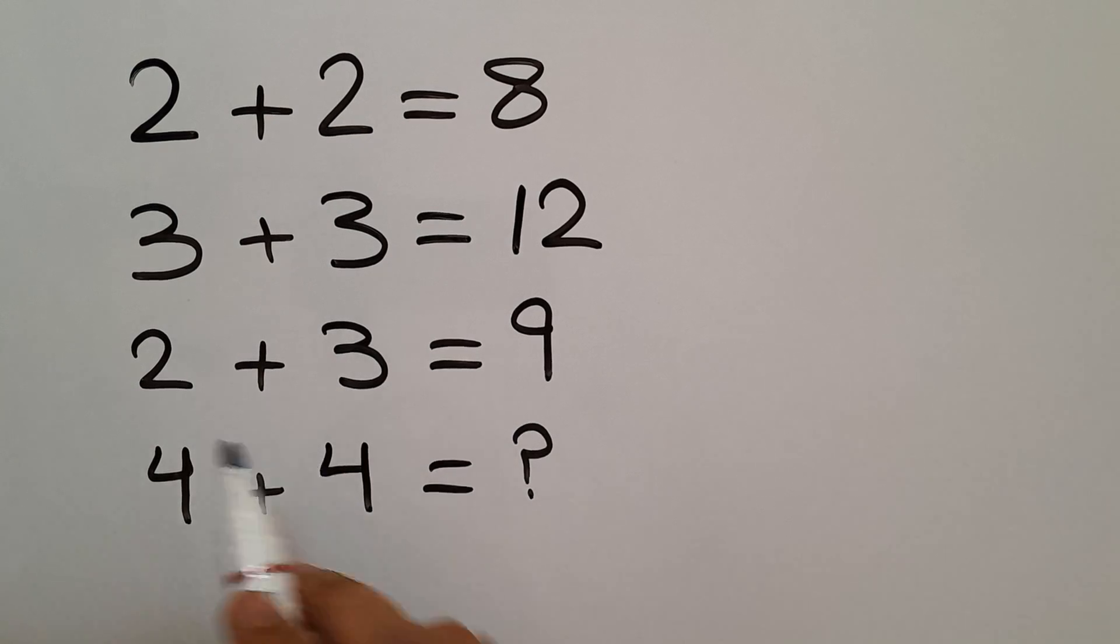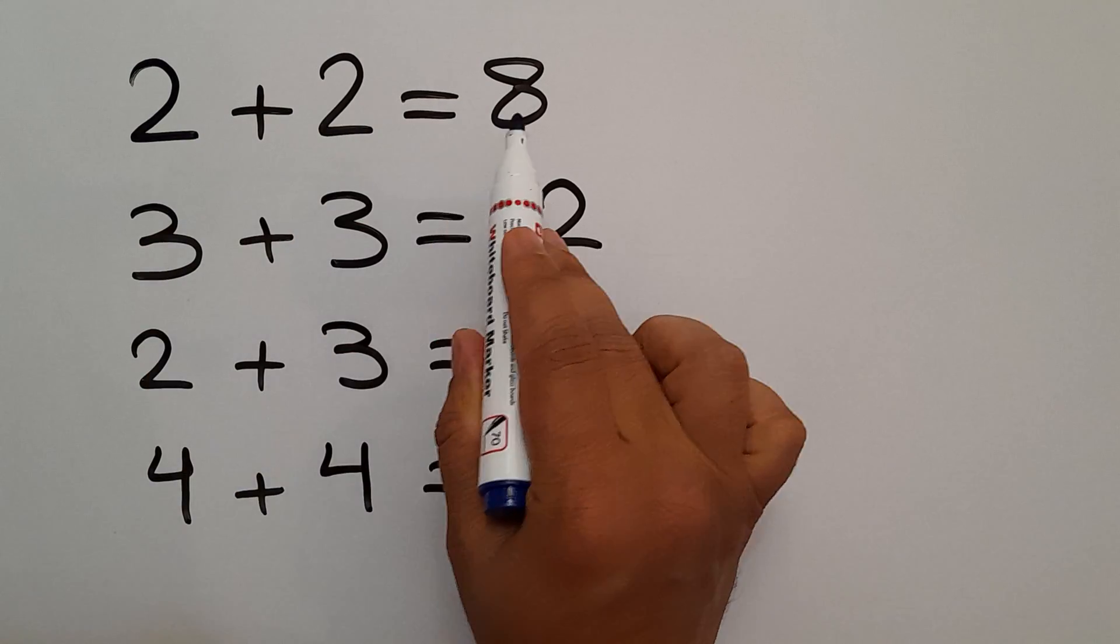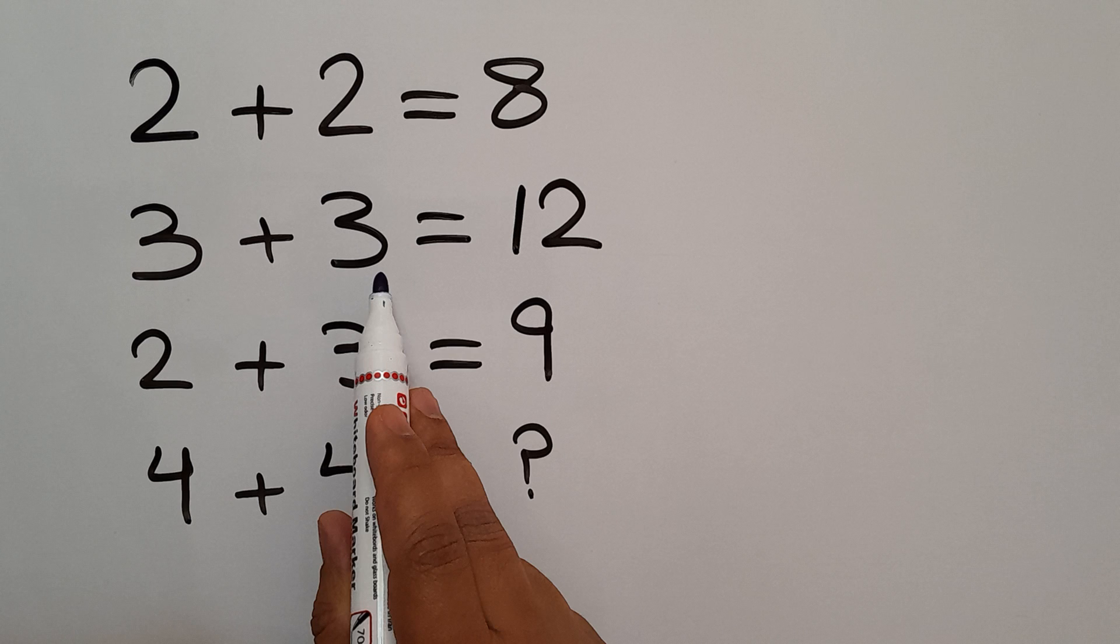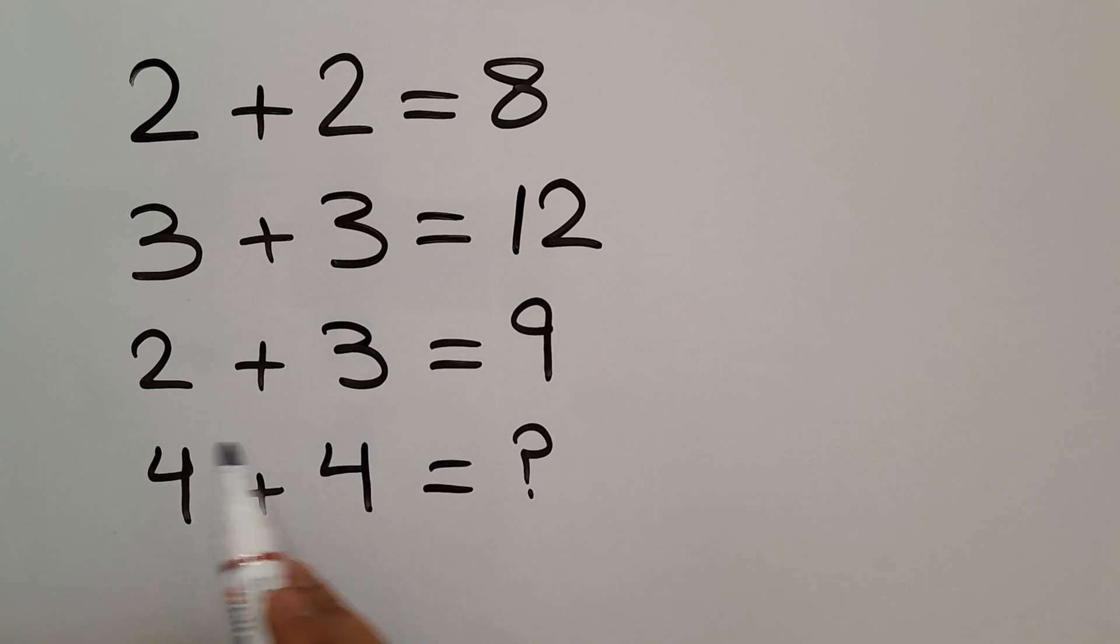Hey guys, welcome to Puzzle Joy. 2 plus 2 equals 8, 3 plus 3 equals 12, 2 plus 3 equals 9, and 4 plus 4 equals question mark. Our goal is to find the pattern that exists here and calculate the missing number.